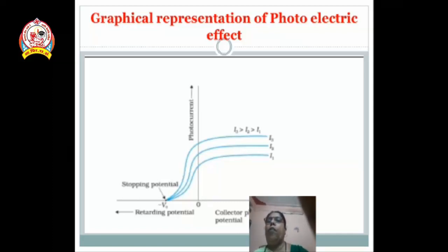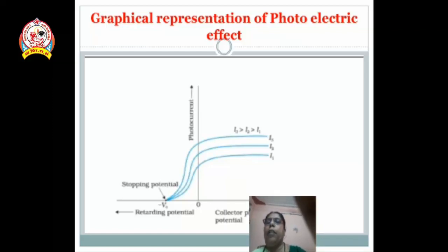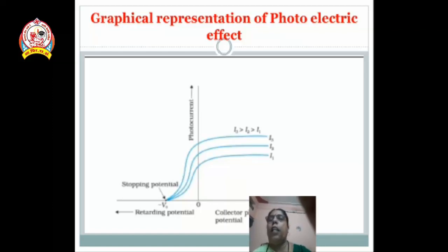Using this experiment, we draw a graph between photo current and collector plate potential — collector plate potential on the x-axis and photo current on the y-axis. We make the cathode negative, zero, and positive. The collector can be made negative up to minus Vs, which is known as retarding potential or stopping potential. At stopping potential, photo current is equal to zero. When we make the collector plate potential positive, photo current goes on increasing, even if the frequency of incident light is the same. For different intensities, if intensity goes on increasing, photo current also goes on increasing.